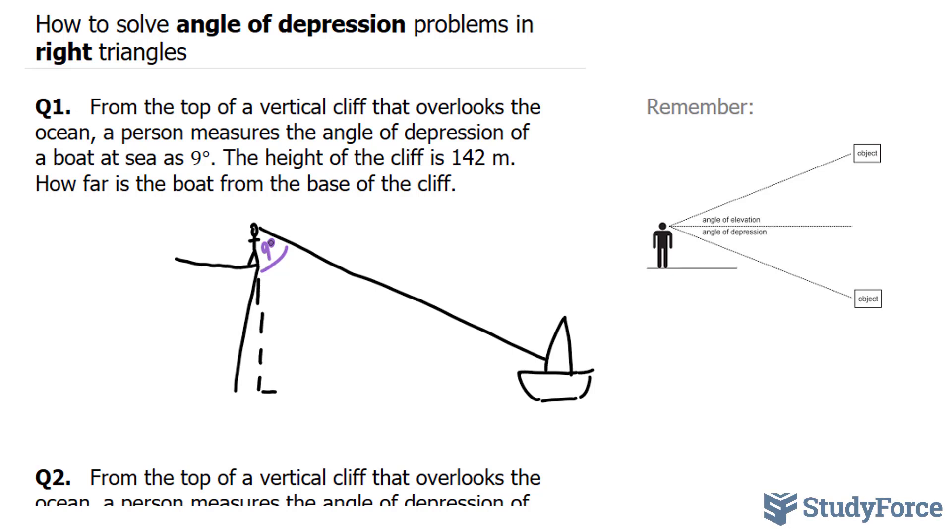The angle of depression for this case, actually, so if we were to draw a horizontal line going this way that is parallel to the sea, I want you to use your imagination here. So this line right here is parallel to this, and we have a 90 degree triangle. The angle of depression here is this angle, 9 degrees. It's not this one.